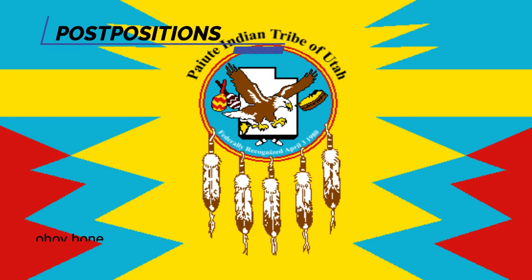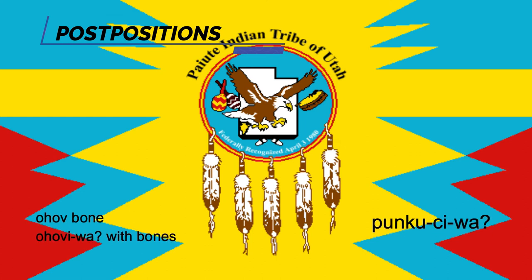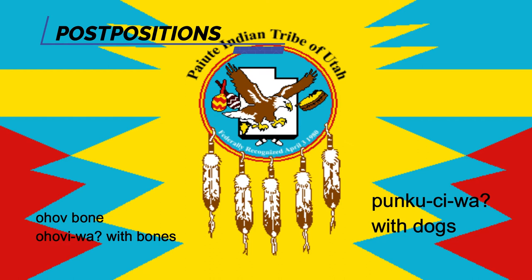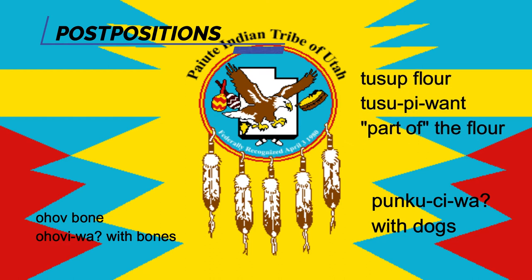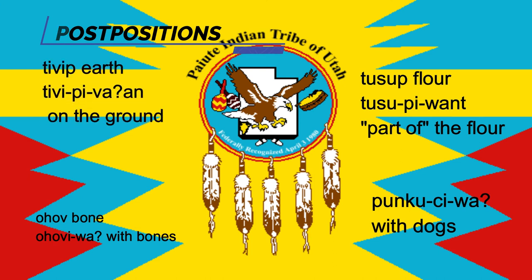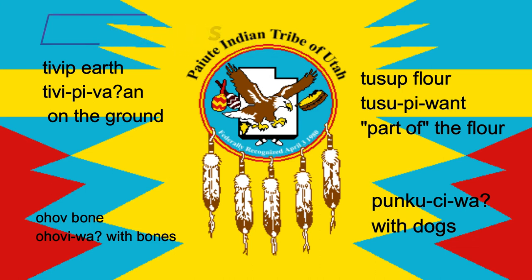For example: ohov, meaning bone; ohoviwa, meaning with bones; pukunsiwa, meaning with a dog; tusup, meaning flower; tusumpiwant, meaning part of the flower; tuvip, meaning earth; tuvipiwaan, meaning on the earth or on the ground.